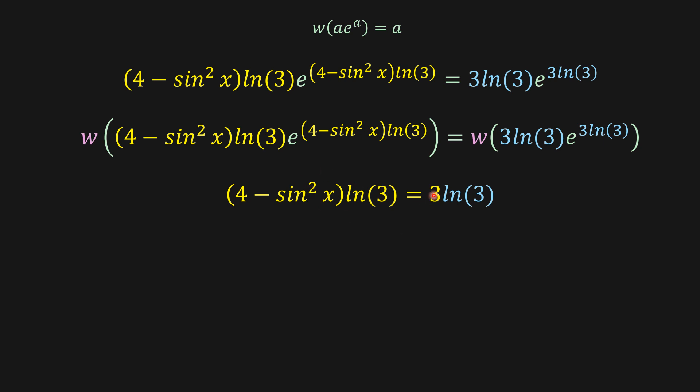And this 3 here should be blue, but it's yellow. Anyways, let's keep it. And then simplifying both sides by ln of 3, we get this one. And then making some simplifications here, we get sine squared equals 1.